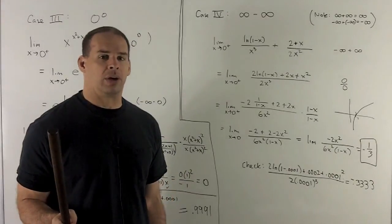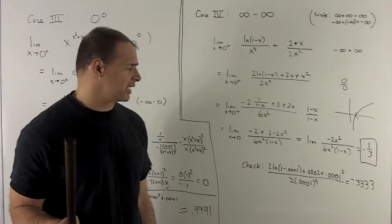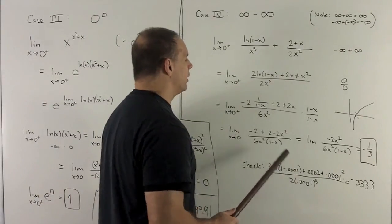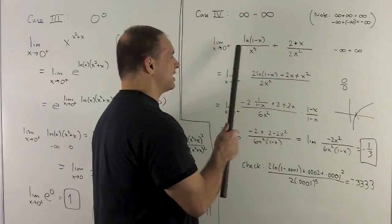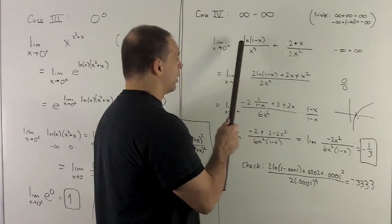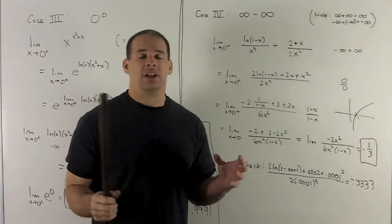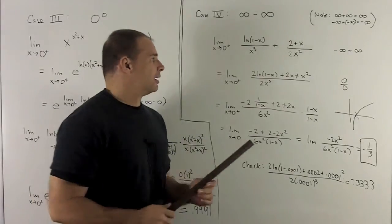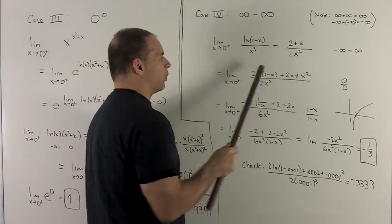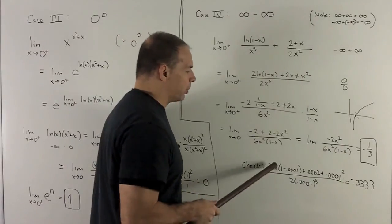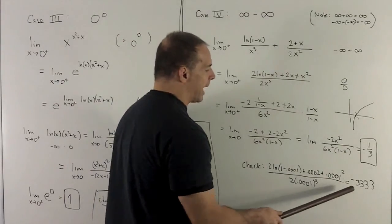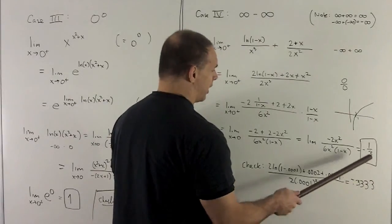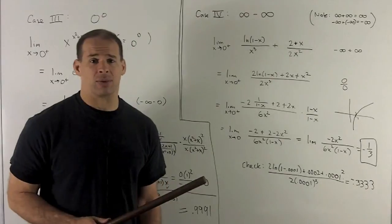Again, with these unusual limits, we check by plugging in a very small number. Using 0.0001 in the combined expression (using the simplified second form to avoid precision issues with the canceling infinities), the calculator gives minus 0.3333 — definitely close enough to minus one-third. So we're confident that's the correct answer.